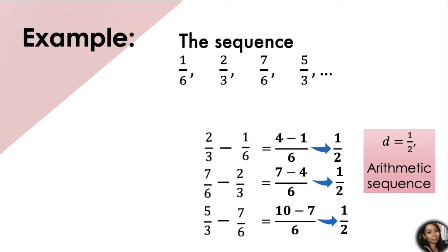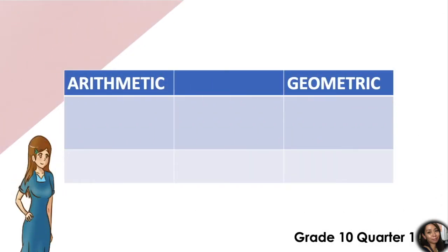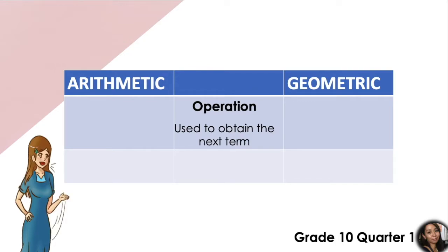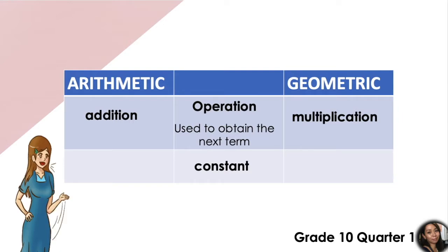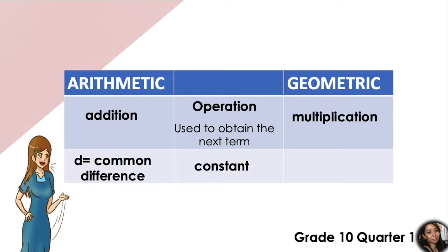Let's compare the two sequences we have discussed: the arithmetic sequence and the geometric sequence. First, the operation used to obtain the next term: in an arithmetic sequence, we use addition — we simply add a constant. While in a geometric sequence, we use multiplication — we multiply a constant to get the next term. In arithmetic, we call that constant the common difference, denoted by small letter d. While in geometric, we call it the common ratio, denoted by small letter r.